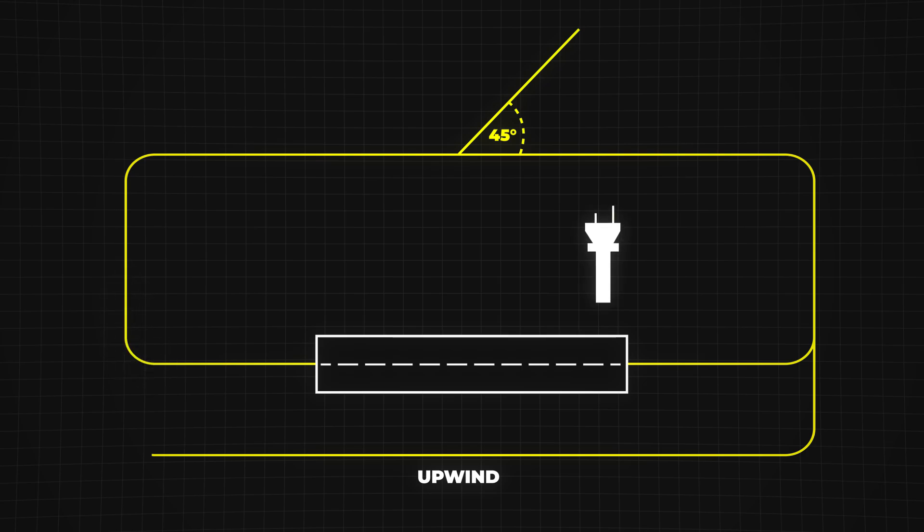At tower-controlled airports, air traffic control (ATC) may direct pilots to enter the pattern differently, such as on the base leg or with a straight-in approach. Some airports may even have both left and right-hand traffic patterns operating simultaneously.